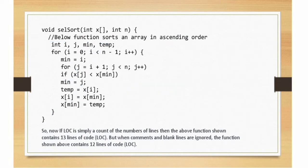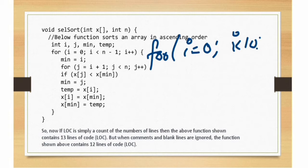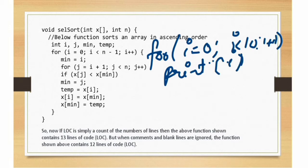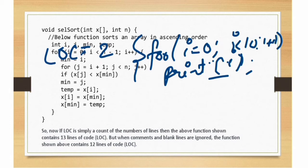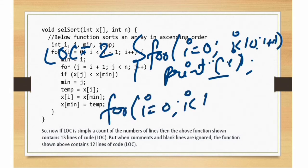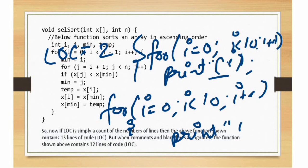The line of code count can vary depending on how you write code. For example, a for-loop written as: for(i=0; i<10; i++) with a print statement can be written on one line or multiple lines. Depending on coding style, the same logic results in different LOC counts. This can be considered a drawback of the LOC method.